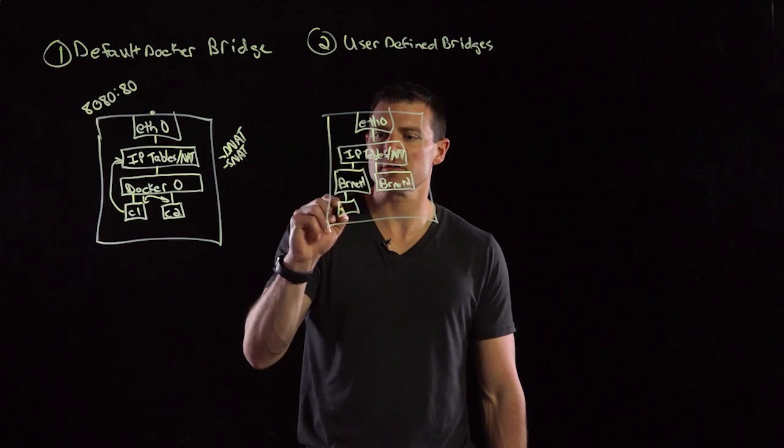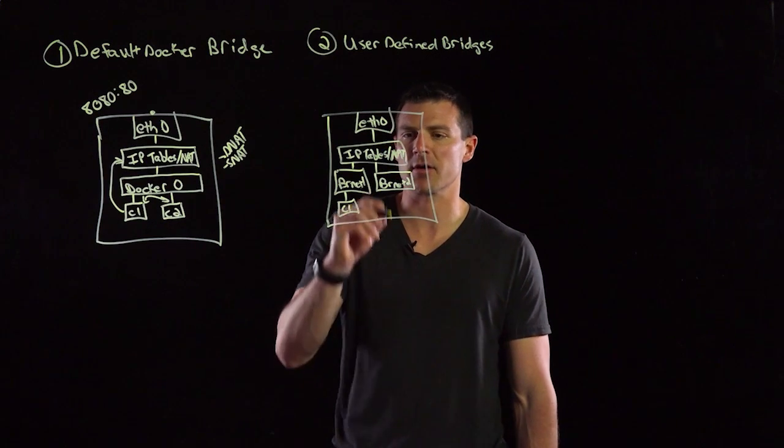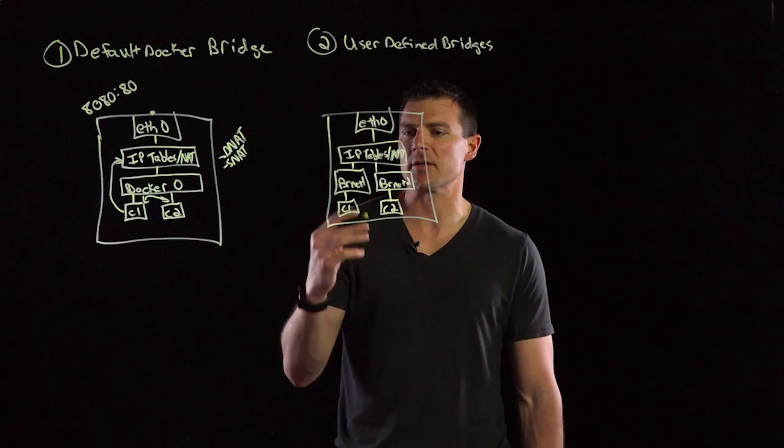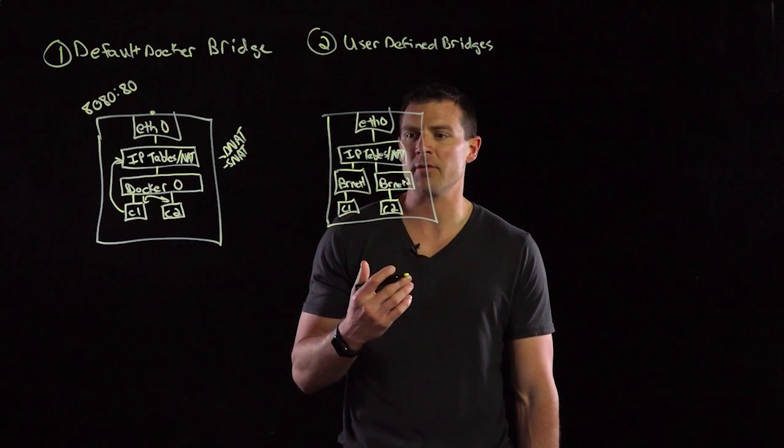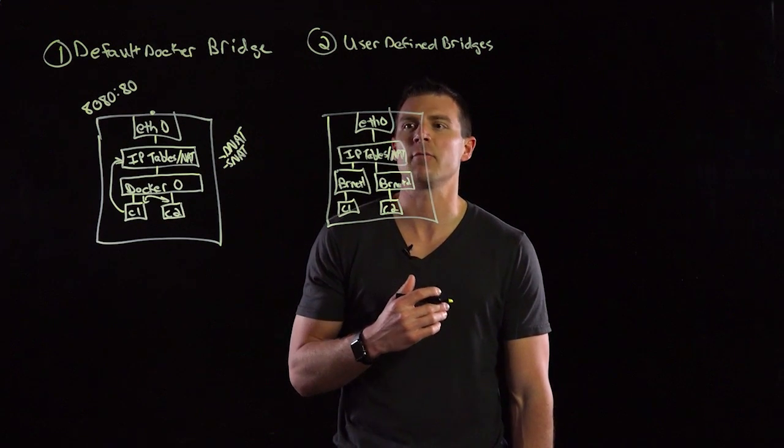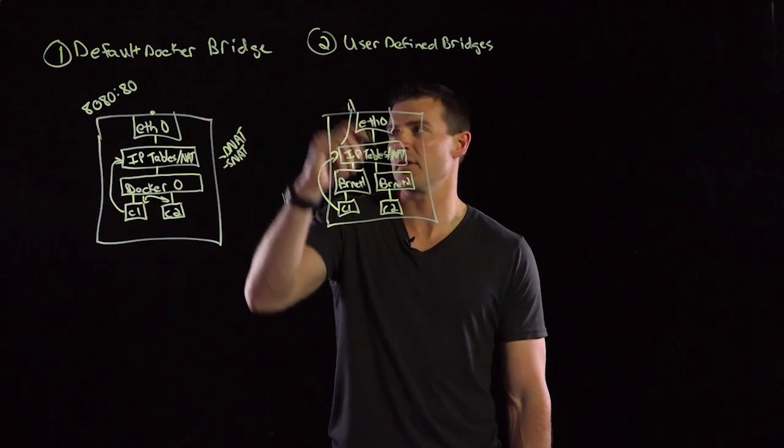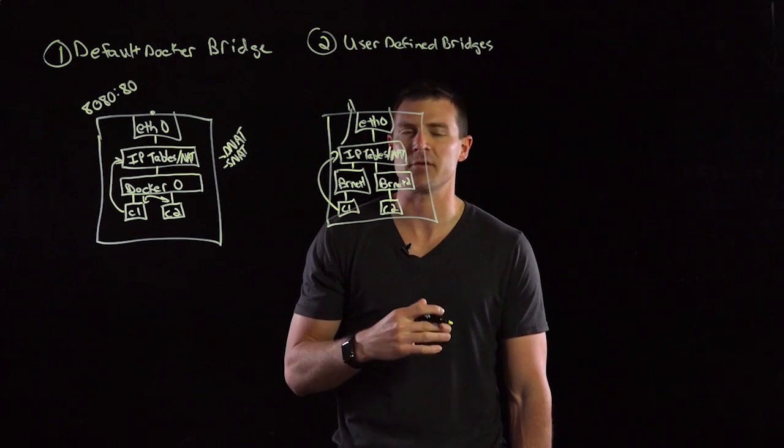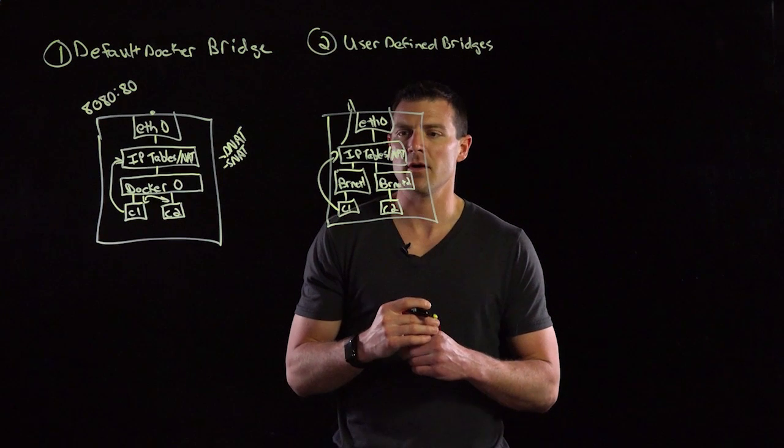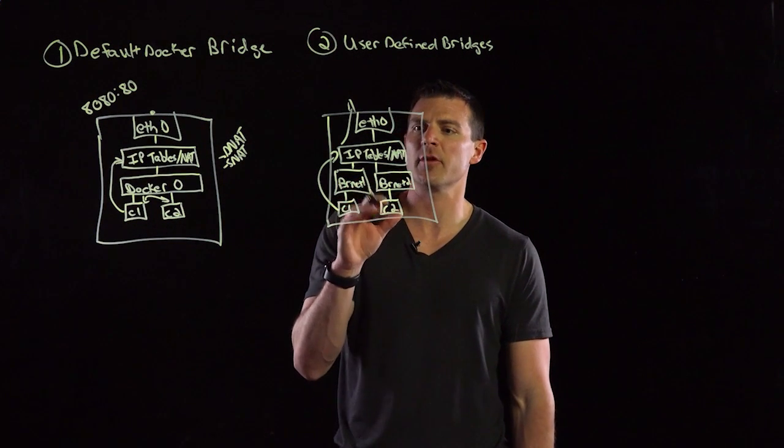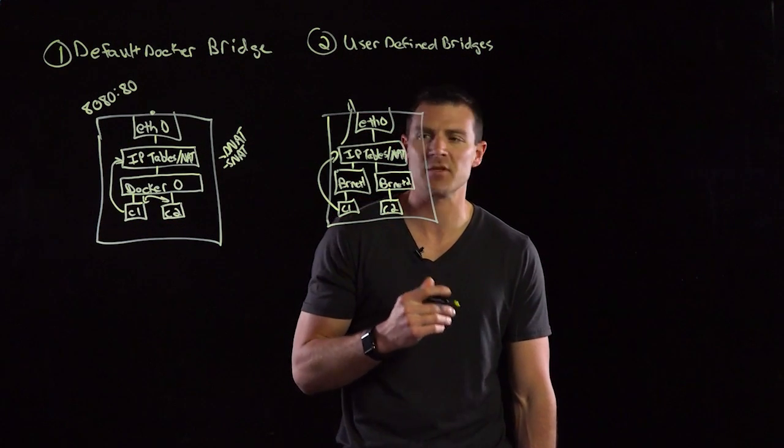And then we can have containers hanging off of each of these different bridges. You would do this with the dash dash net command when you start the Docker container. So what this allows you to do is have some isolation between containers. By default, these two containers cannot talk to each other. And then the same inbound and outbound behavior remains the same. It's still going to use IP tables to NAT outbound, and it's also going to use the DNAT rules to map inbound as well. So really, this is meant for the isolation of containers on the same host to provide some type of segmentation between them.